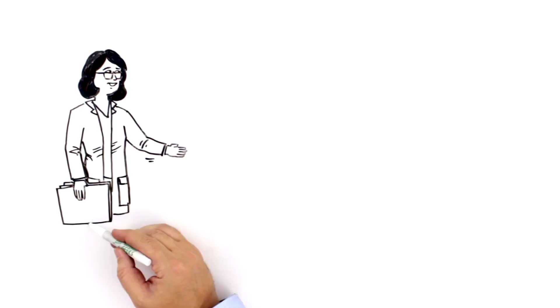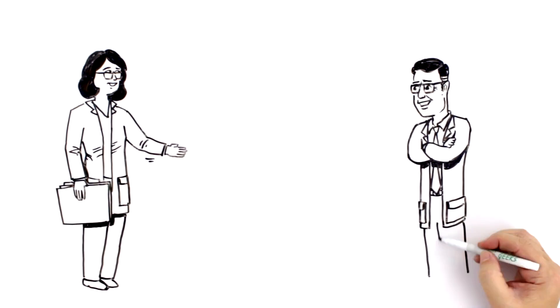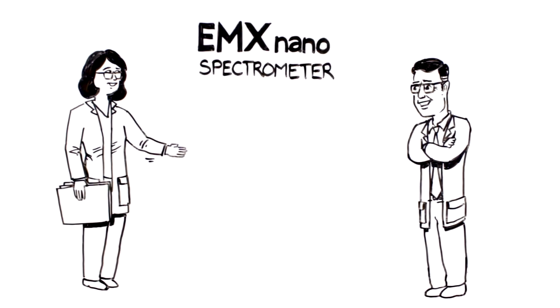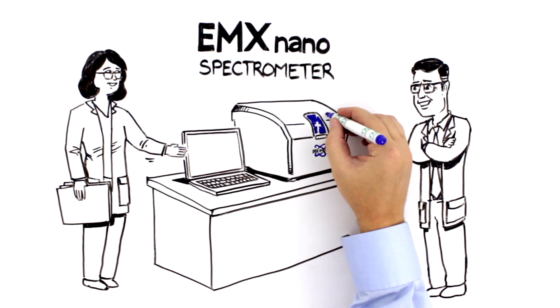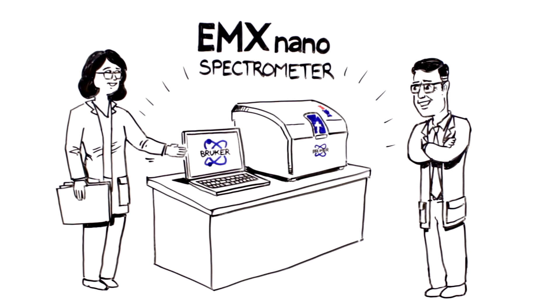Angela and Mayank's searches lead them to the same instrument, the EMX nano spectrometer. This is because Bruker has brought all the power and accessibility of EPR spectroscopy to the benchtop with the EMX nano.